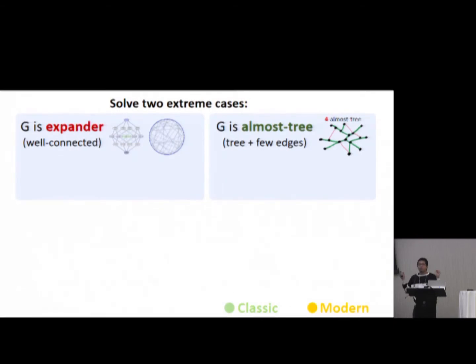Within this paradigm, we also need to use some cool techniques that are used before in static setting, but we apply them in the dynamic case. So let's see exactly what is this paradigm. Basically we need to solve two extreme cases. First, when the graph is expander, basically the graph is well connected. And the next case is when the graph is almost tree. You should think of this as the graph is just a tree plus few edges. For example, this is a tree and four edges additionally.